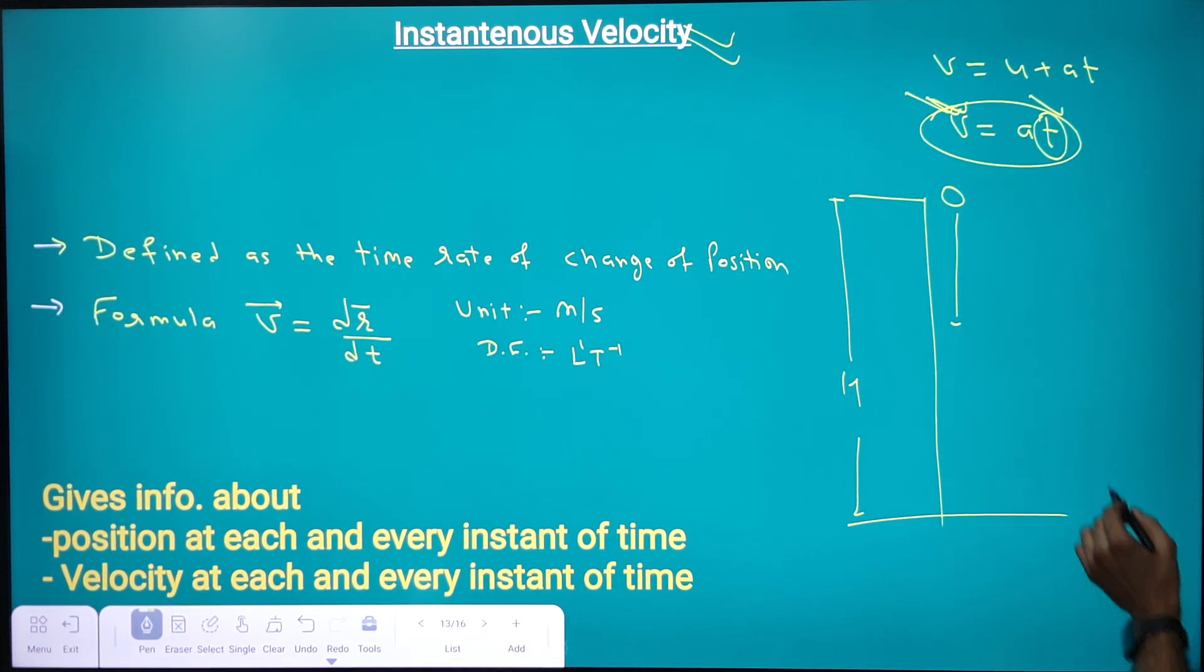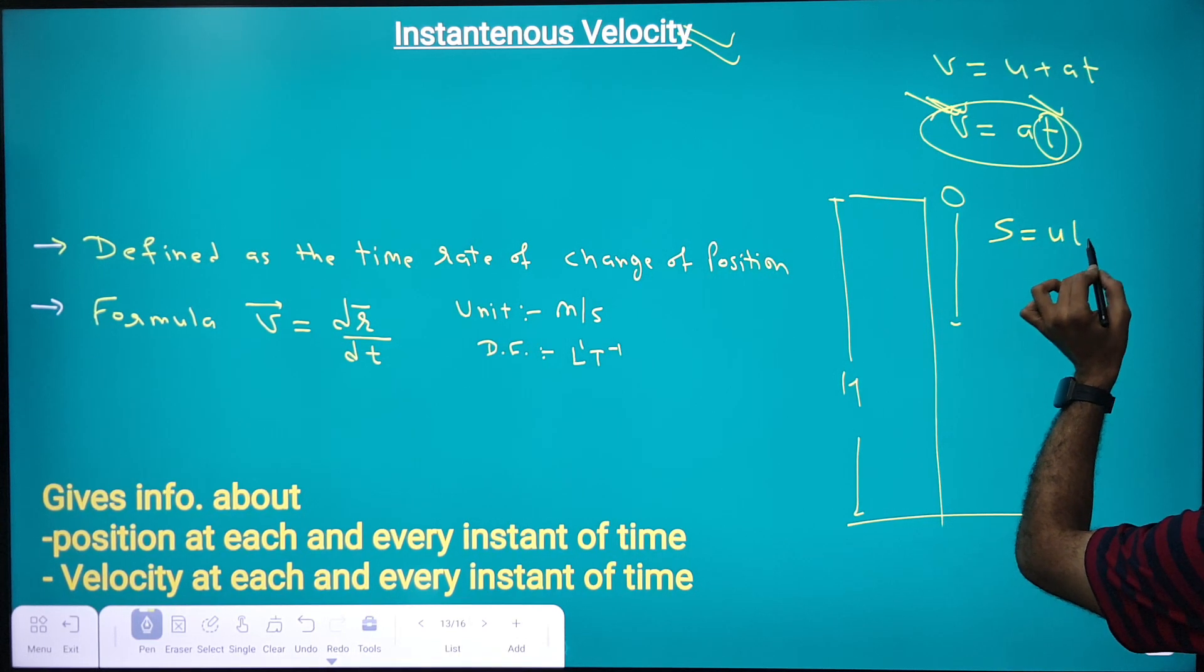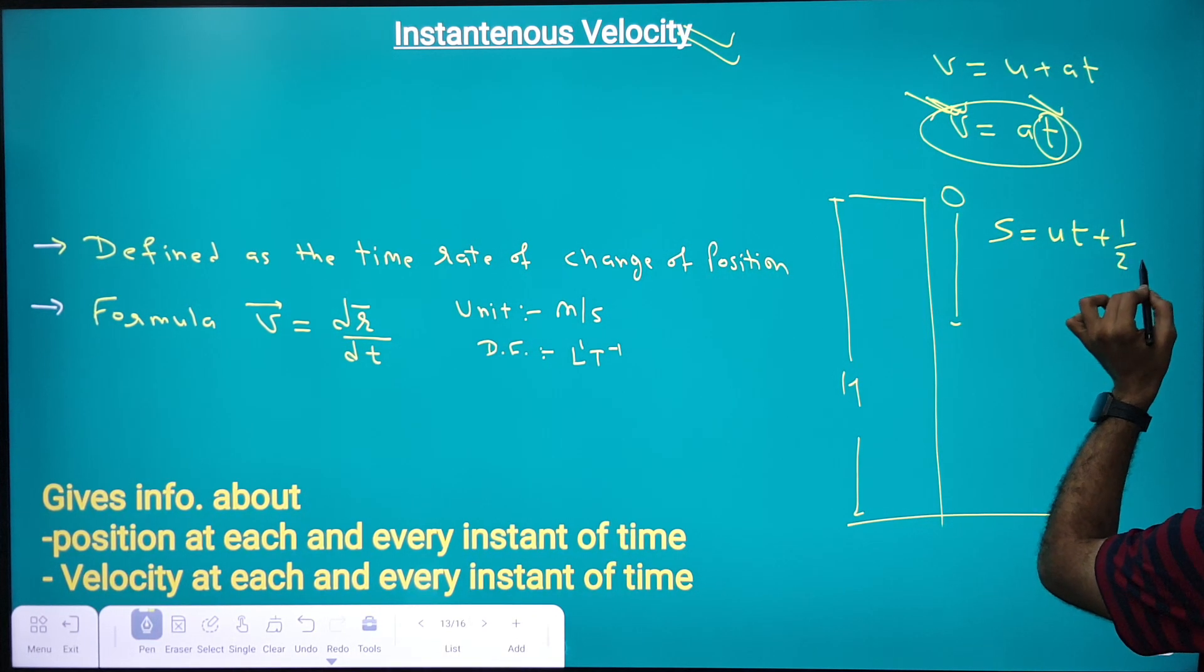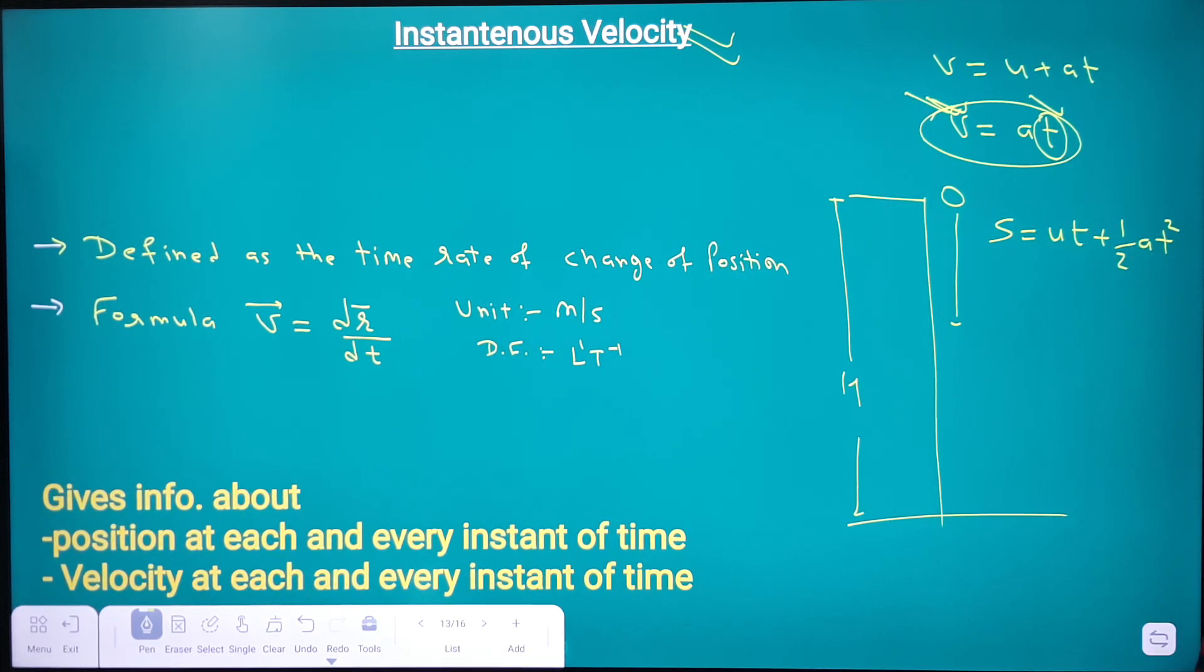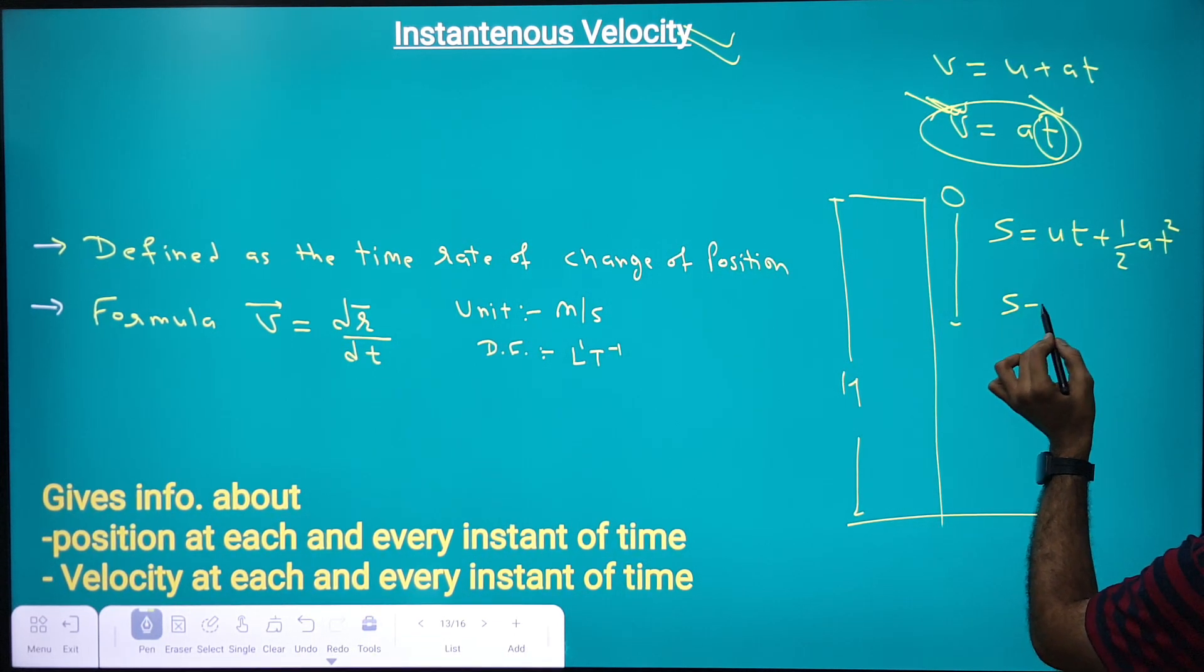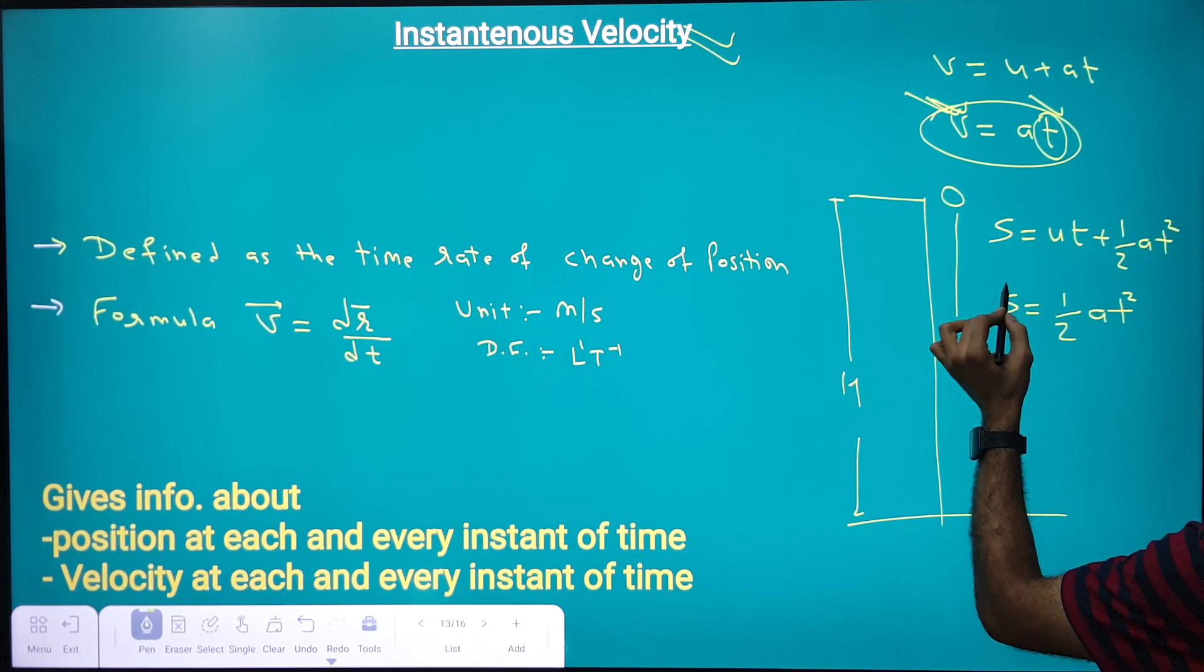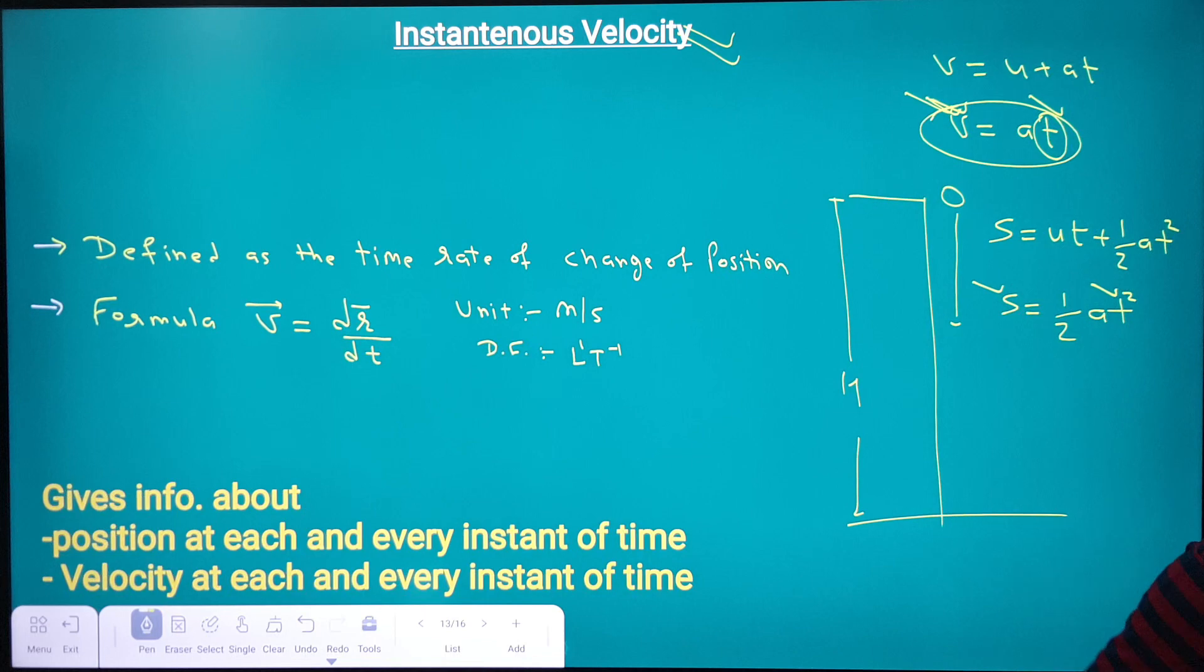Along with that, if we write the equation s = ut + 1/2 at², which is the equation of motion with uniform acceleration, and if initial velocity is zero, we get s = 1/2 at². So with the help of this equation, we can find out position at each and every instant of time.